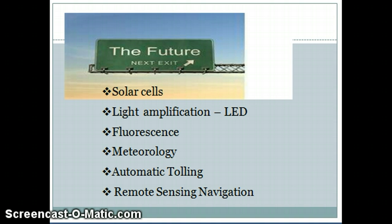It has been suggested that optical antennas are a way to advance the frontiers of meteorology and to control light-matter interactions. Specific applications include collision avoidance, automatic tolling, and remote sensing navigation. There could be other implications for super-high-resolution optical microscopes, faster chips for computers, and powerful telescopes with high resolution.